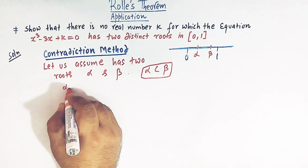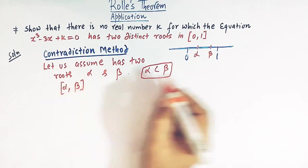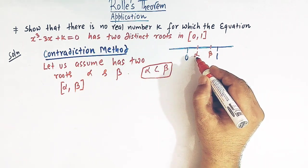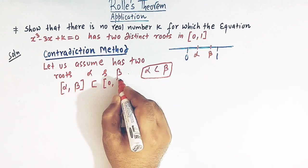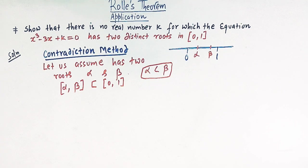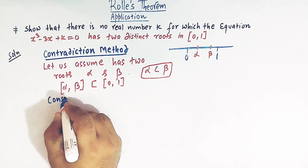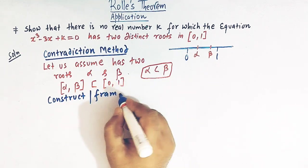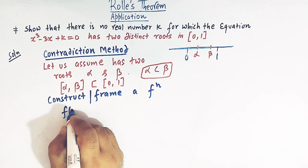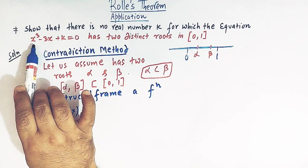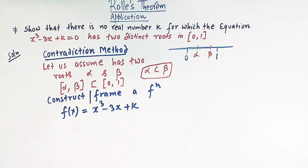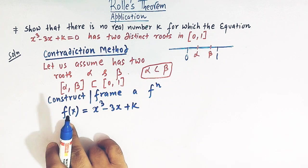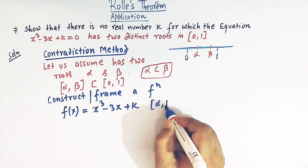We can construct an interval [α, β] which is a subset of [0, 1]. Now here comes the role of Rolle's theorem. We will construct a suitable function f(x), which we can take directly from the equation: f(x) = x³ - 3x + k. We will now apply Rolle's theorem to this function on the interval [α, β].